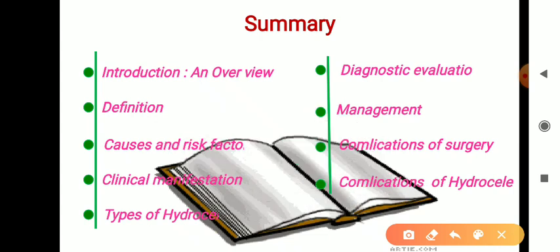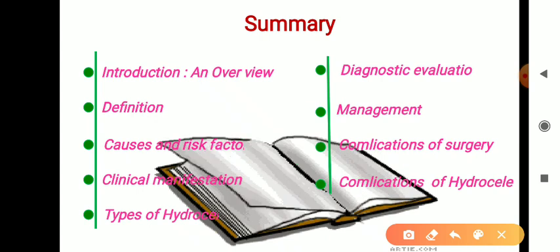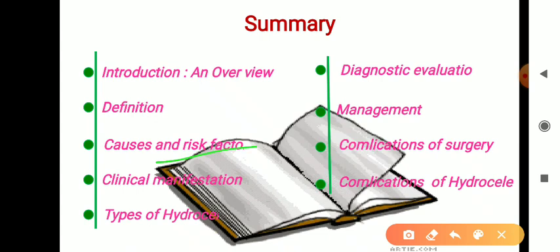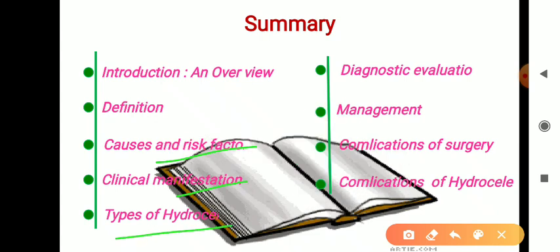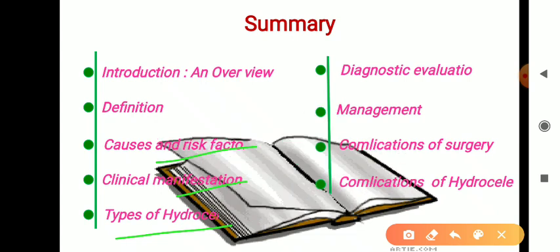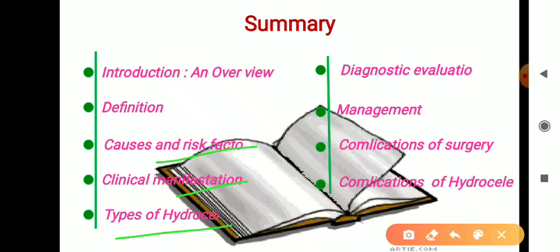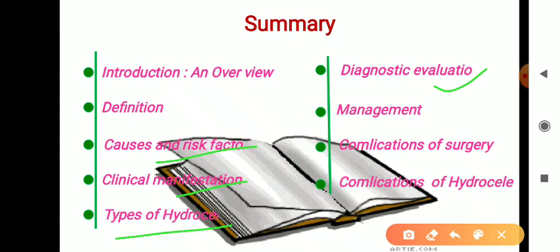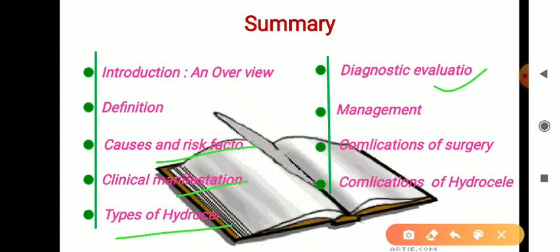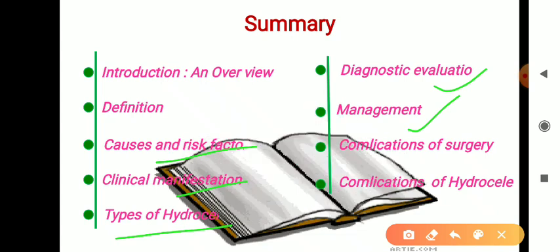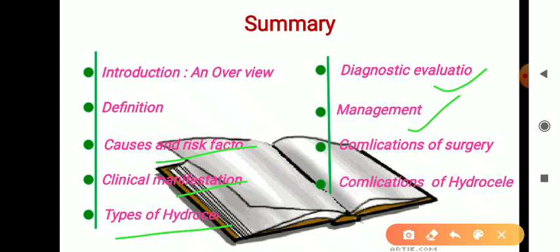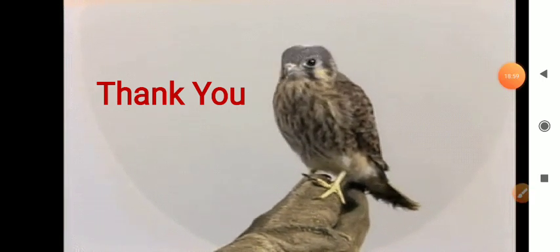In summary: hydrocele is a fluid-filled cavity or sac around the testicles causing swelling in the scrotum. Causes and risk factors are divided into those for baby boys and older males. Clinical manifestations include scrotal swelling and tenderness. Types are congenital and acquired. Diagnostic evaluation includes physical examination, urine test, transillumination, blood test, and ultrasonography. Management involves surgical options including scrotal surgery and needle aspiration. Complications include reoccurrence and infection.